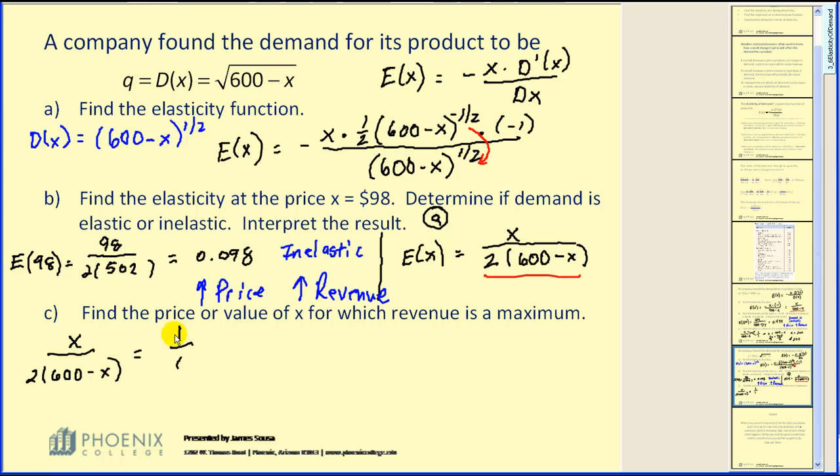I like to do cross products, so I'm going to write this as one over one, which means that if I do my cross products, x times 1 must equal 2 times the quantity 600 minus x times 1. Distribute the 2, add 2x to both sides, divide by 3. x is equal to 400. The price of $400 will maximize our revenue.